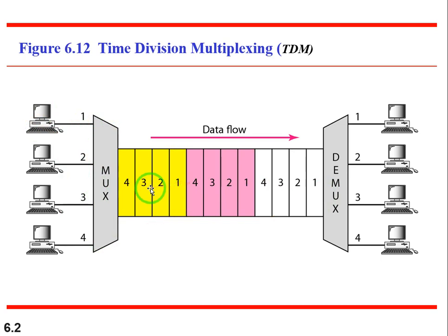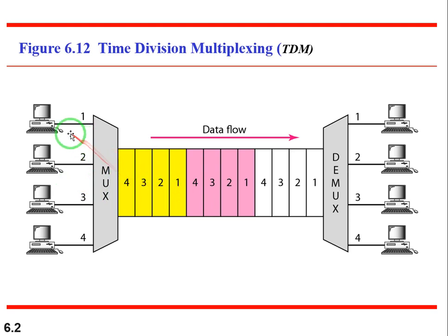One important thing to keep in mind about TDM: in FDM we were wasting bandwidth on guard bands. In frequency multiplexing, some bandwidth is wasted. Here in TDM we don't need any guard bands because each sender's data is differentiated by its time slot — sender one, two, three, four are differentiated by time slots one, two, three, four.